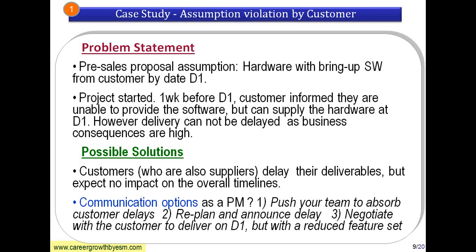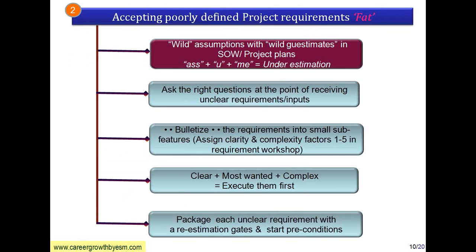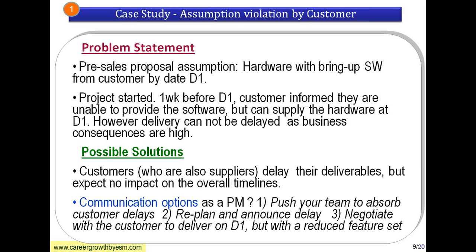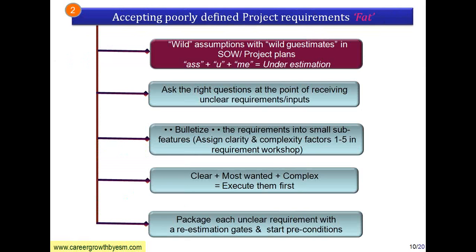Take the high-clarity and high-complexity requirements first for analysis. Focus on the requirements that are clear, most wanted by the customer, and complex to implement — take them first and execute. For unclear requirements, package each with a re-estimate gauge. Go back to the customer to seek clarity, or propose certain requirements back to the customer and get them approved. This is how you convert an unclear requirement back into clarity.